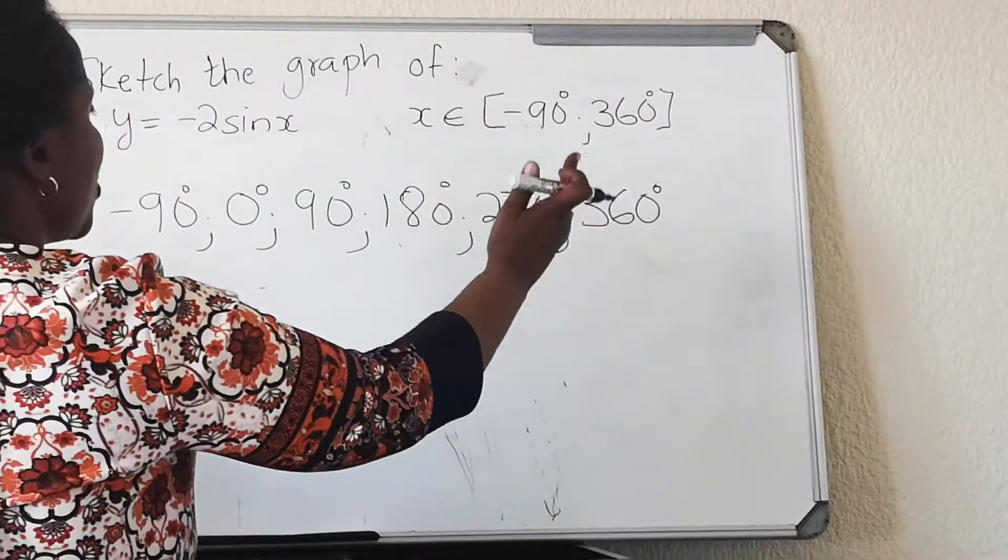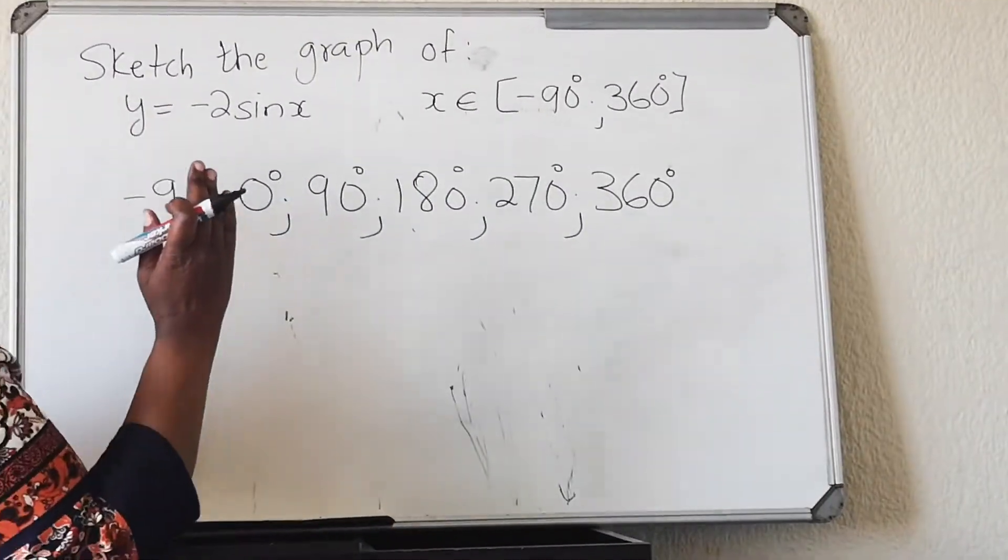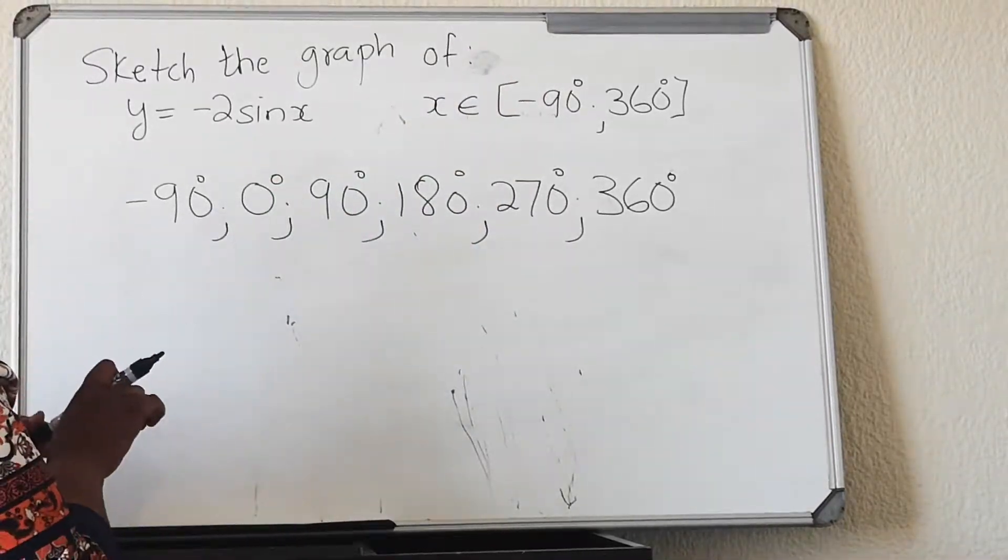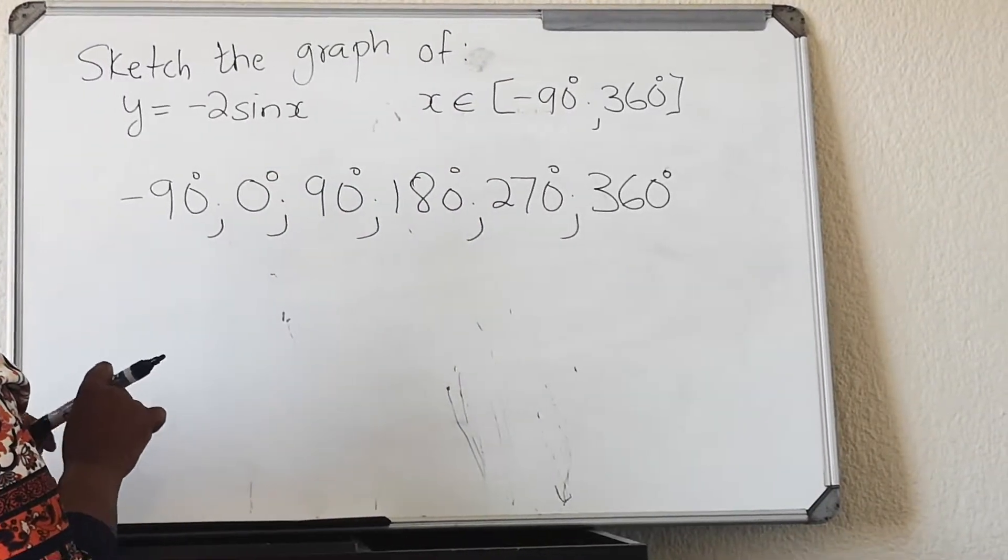Right, this is your restriction, so you only stick to the x-values that you were asked in the restriction. Don't go over. You're actually going to get it wrong.